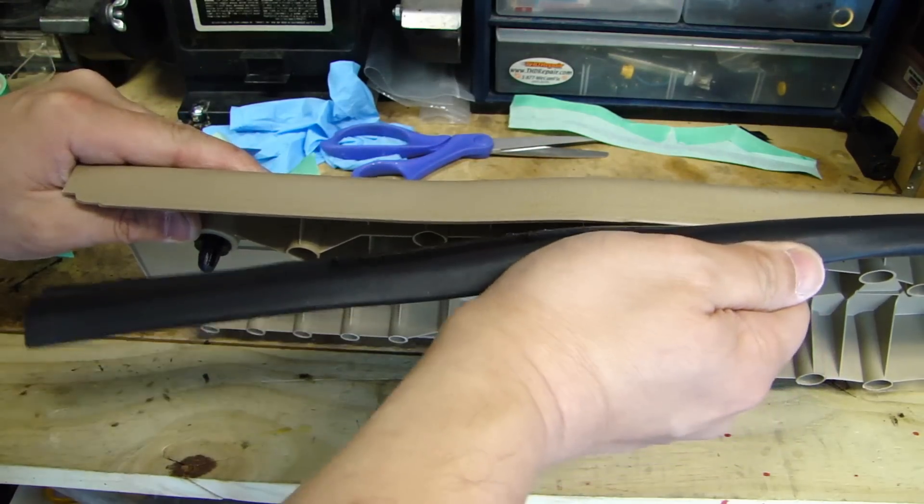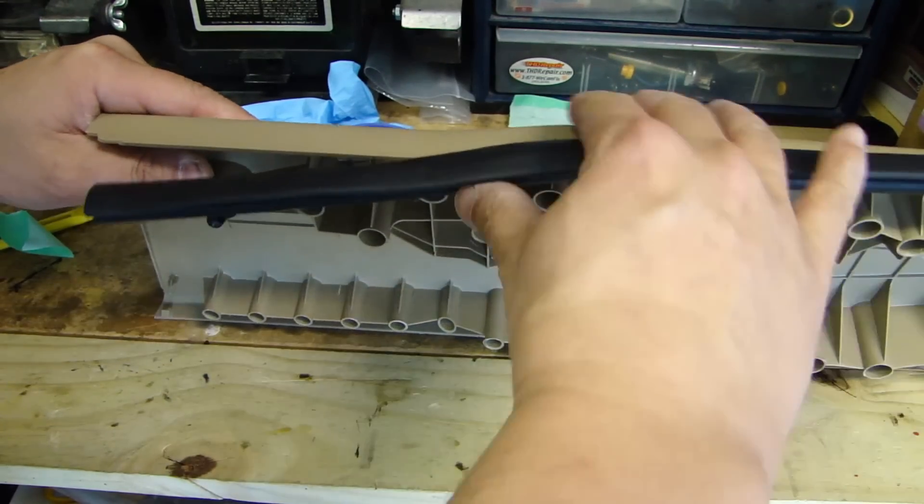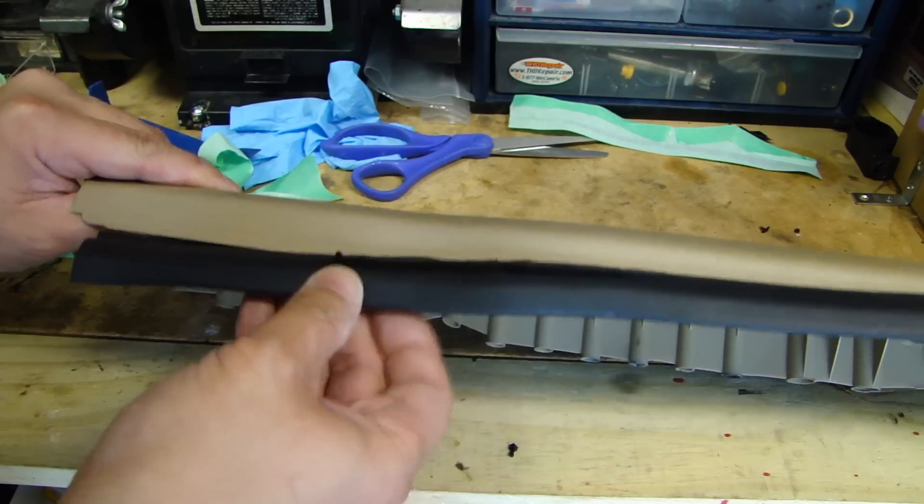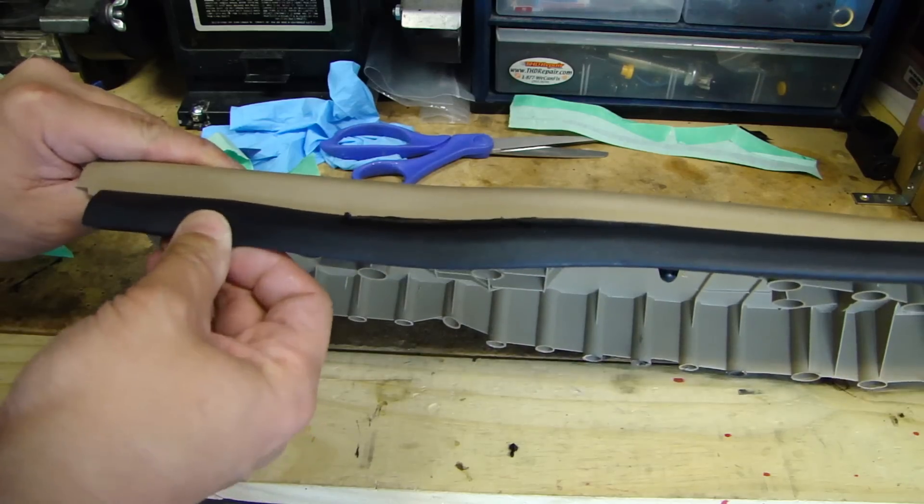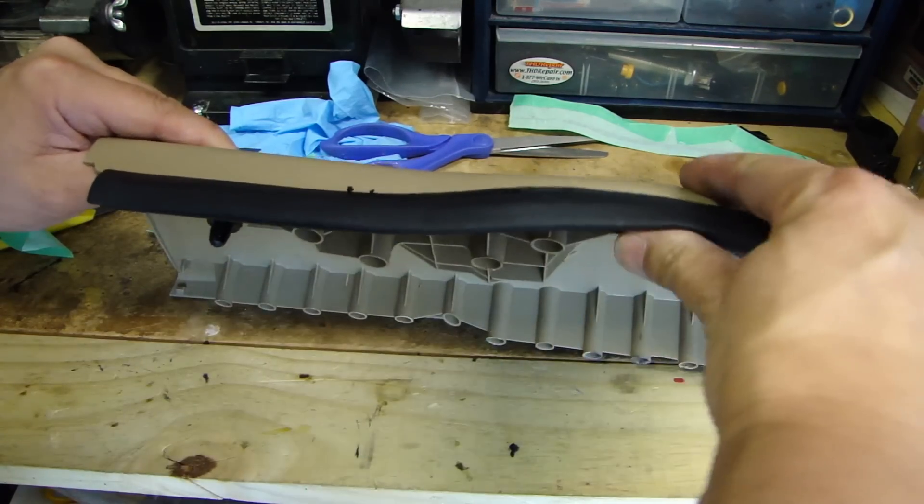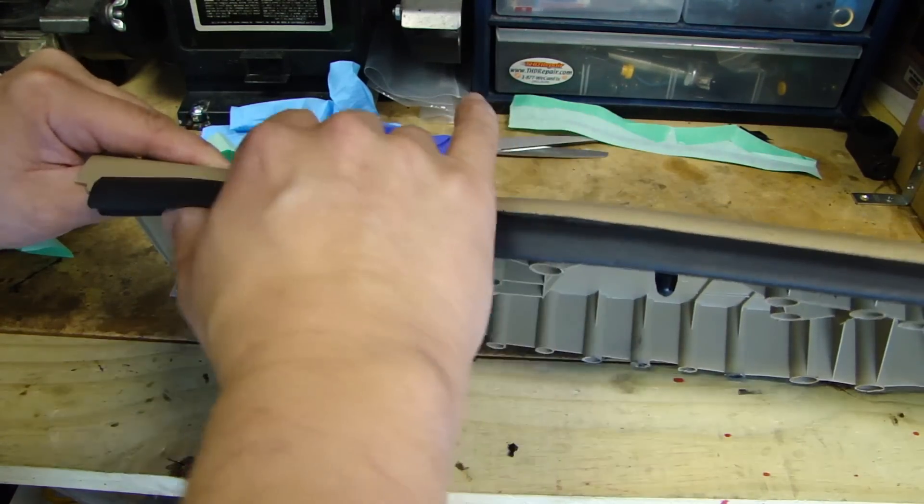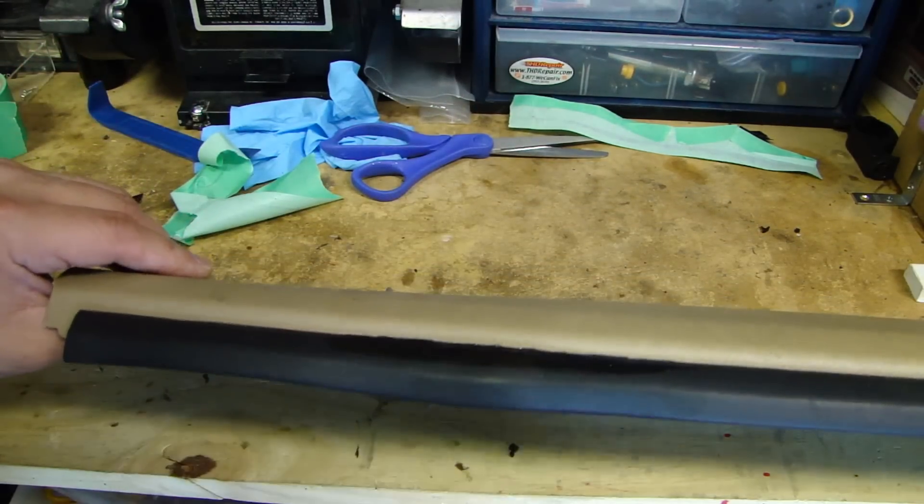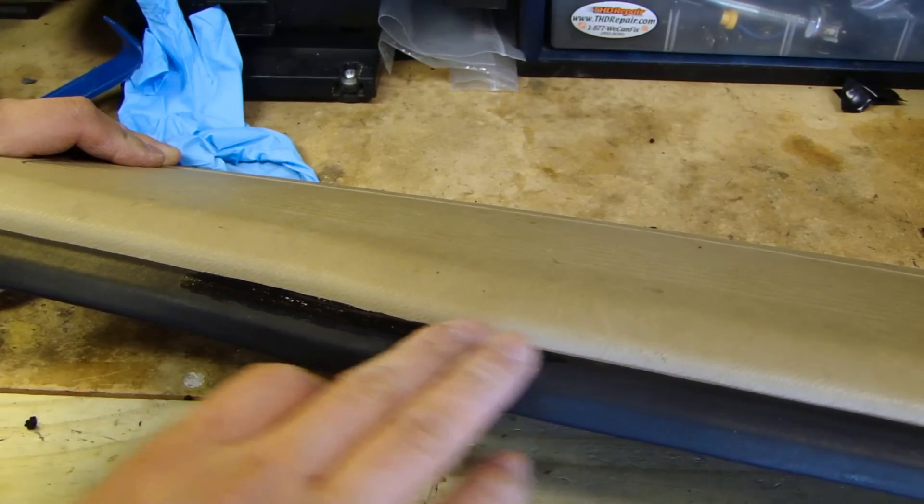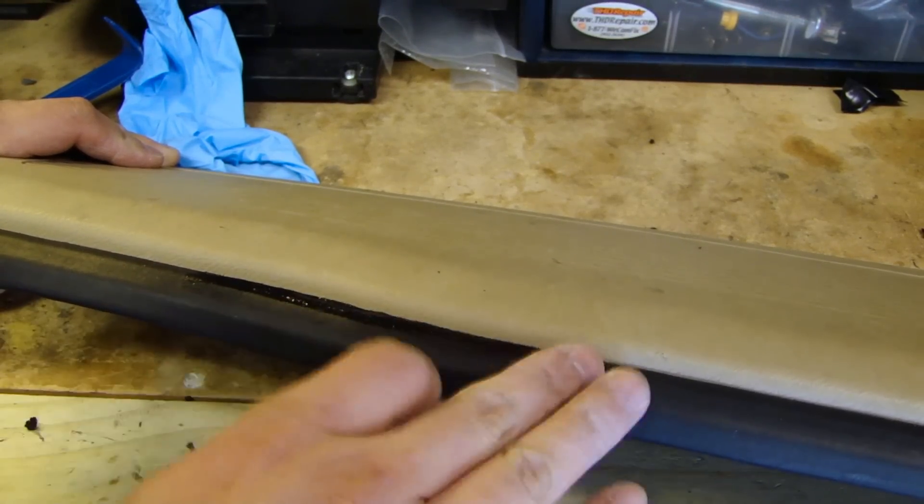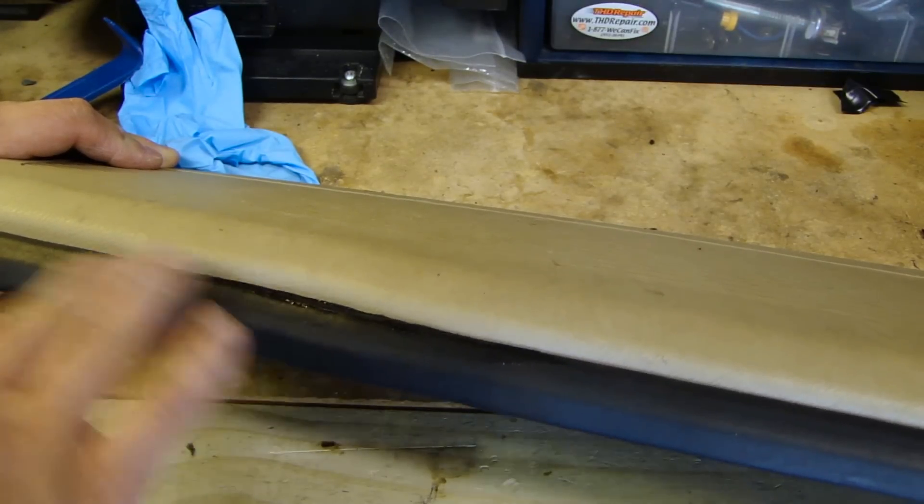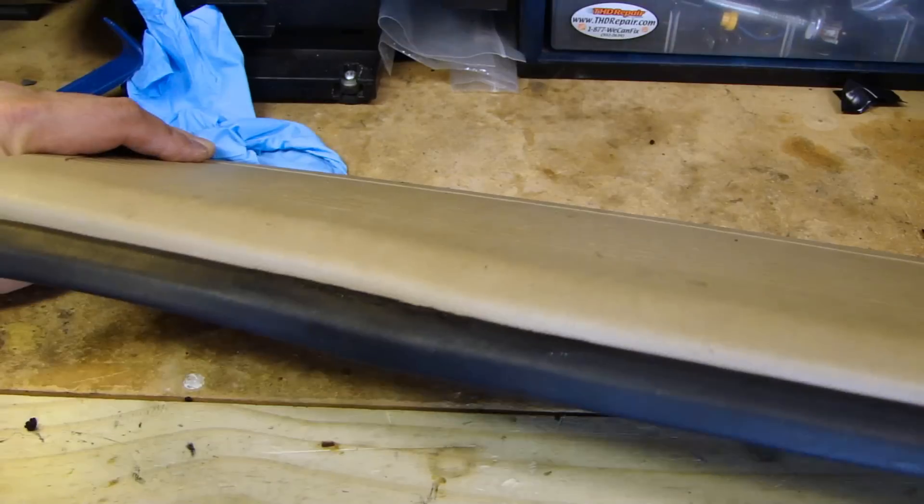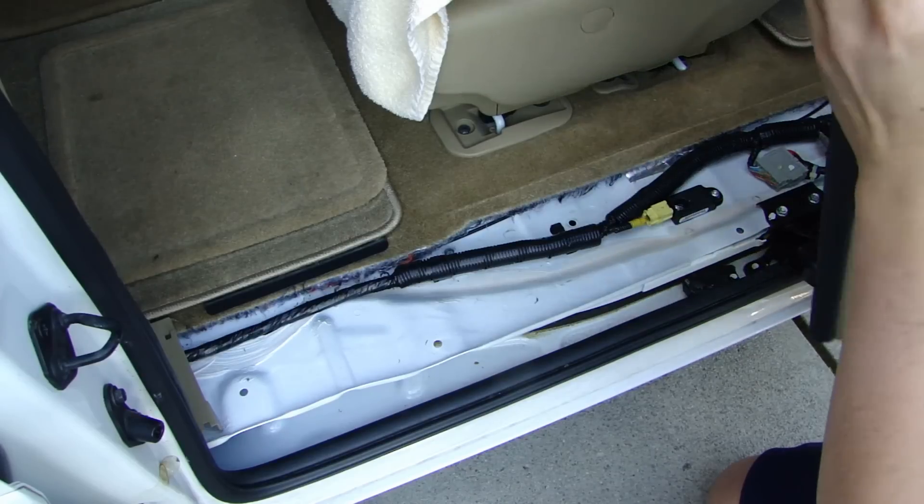Go ahead and reinstall this back on. Now you'll notice the silicone is quite shiny. All you have to do is just gently rub it with your finger and it'll take that shine right off. It'll blend right into the rest of the rubber. There you go. Now we'll go ahead and install this back in the car.